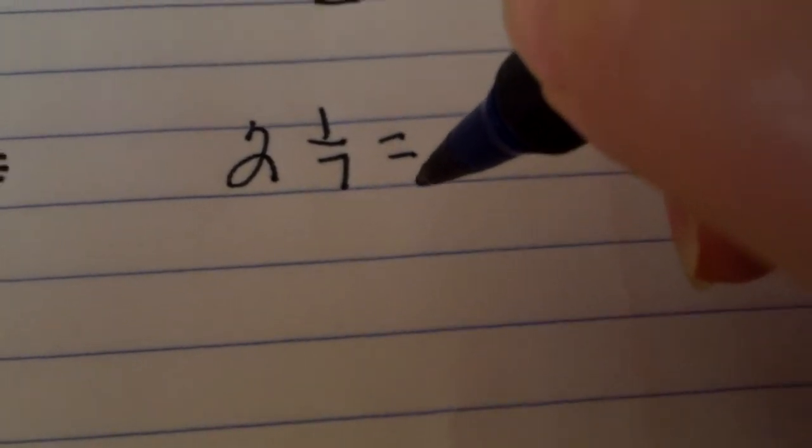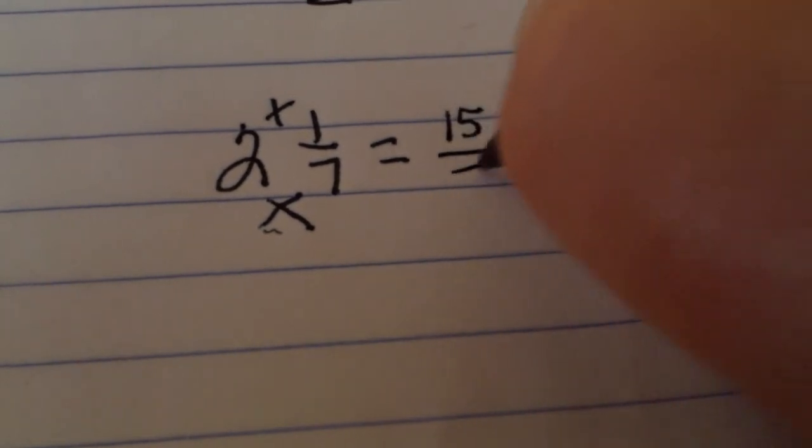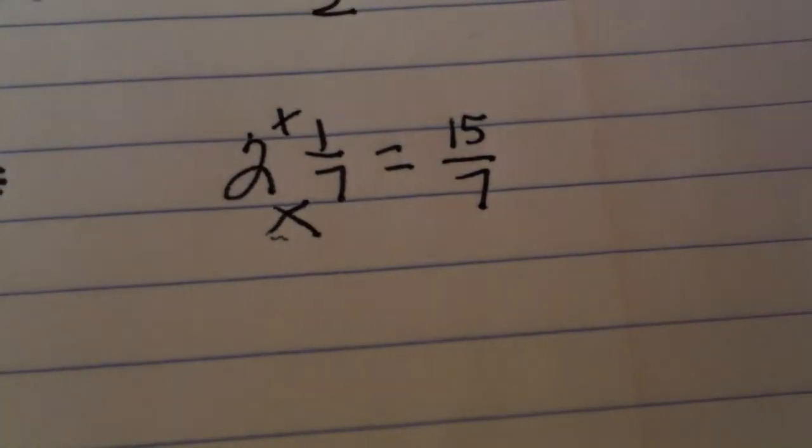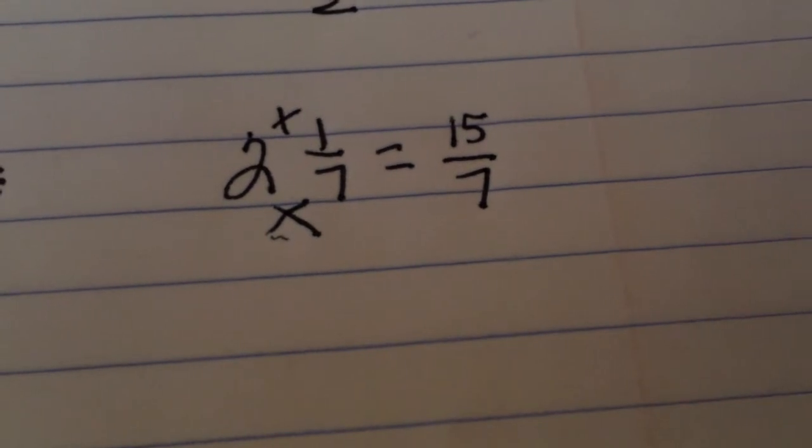Let's do one more real quick. Let's make sure you got it. Let's say you have two and one seventh. Now think in your head what you're going to do. You're going to multiply and then we're going to add. Seven times two is 14 plus the one is 15. And again, the denominator not going anywhere.